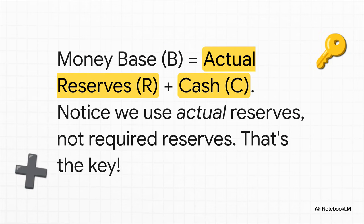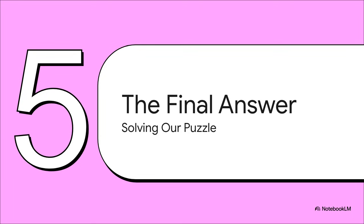Now we have our master formula. The money base, which we'll call B, is simply the actual reserves R plus the cash held by the public C. And this is the most important part: we use the actual reserves of 75, not just the required 25. That is the entire key to this whole puzzle. We've got our actual reserves, we've got our cash, we've got the formula — time to put it all together. The final money base for this economy is 105.